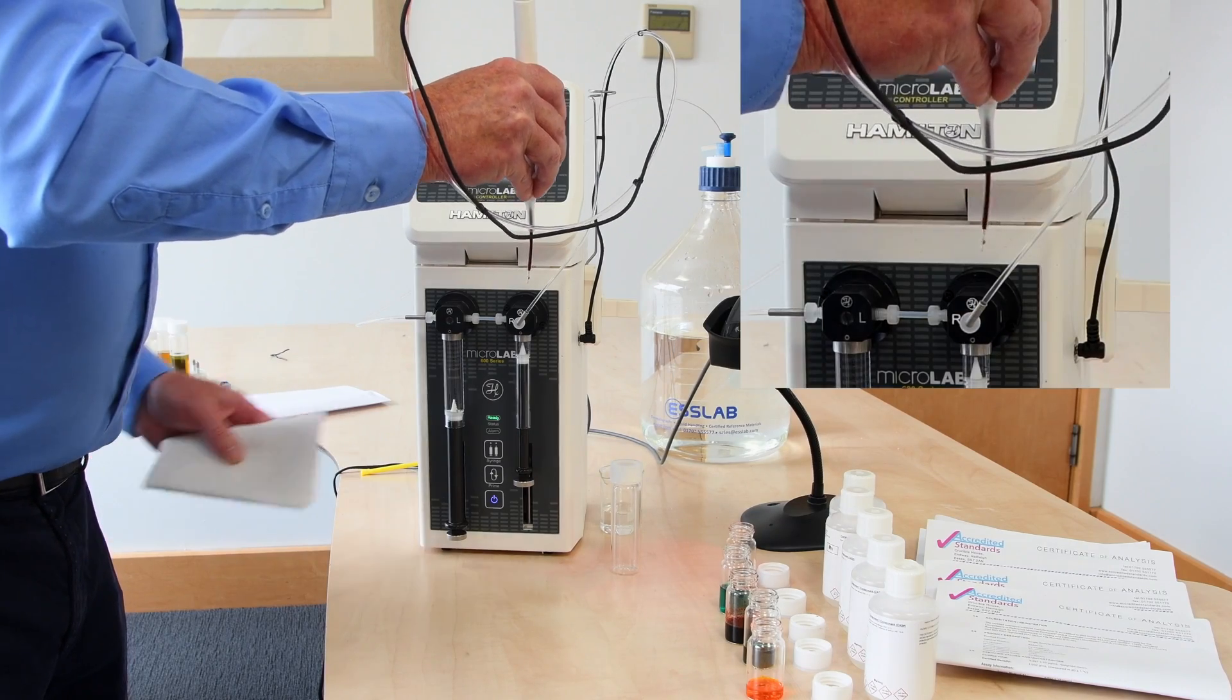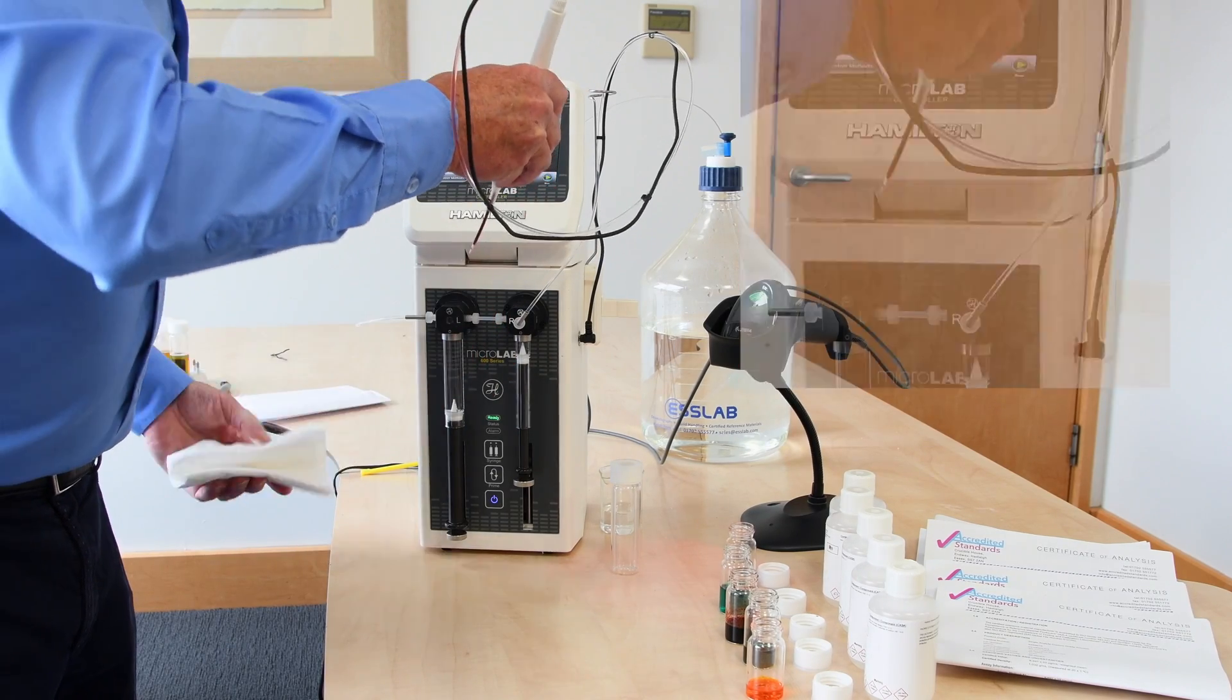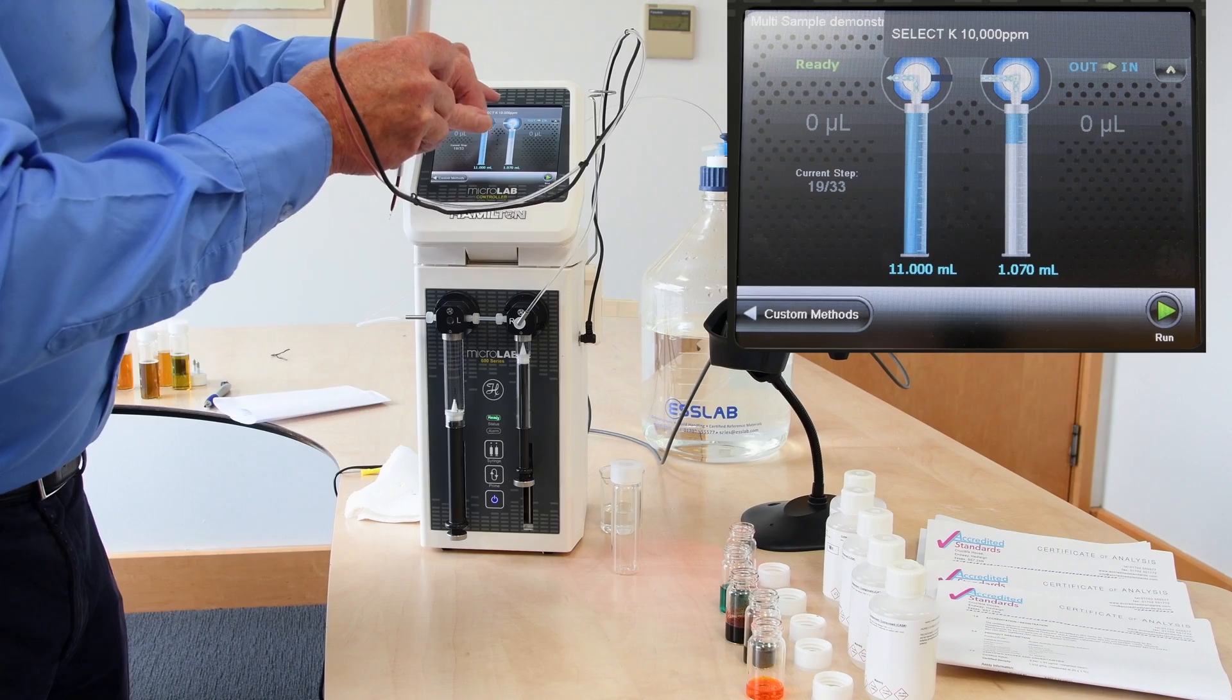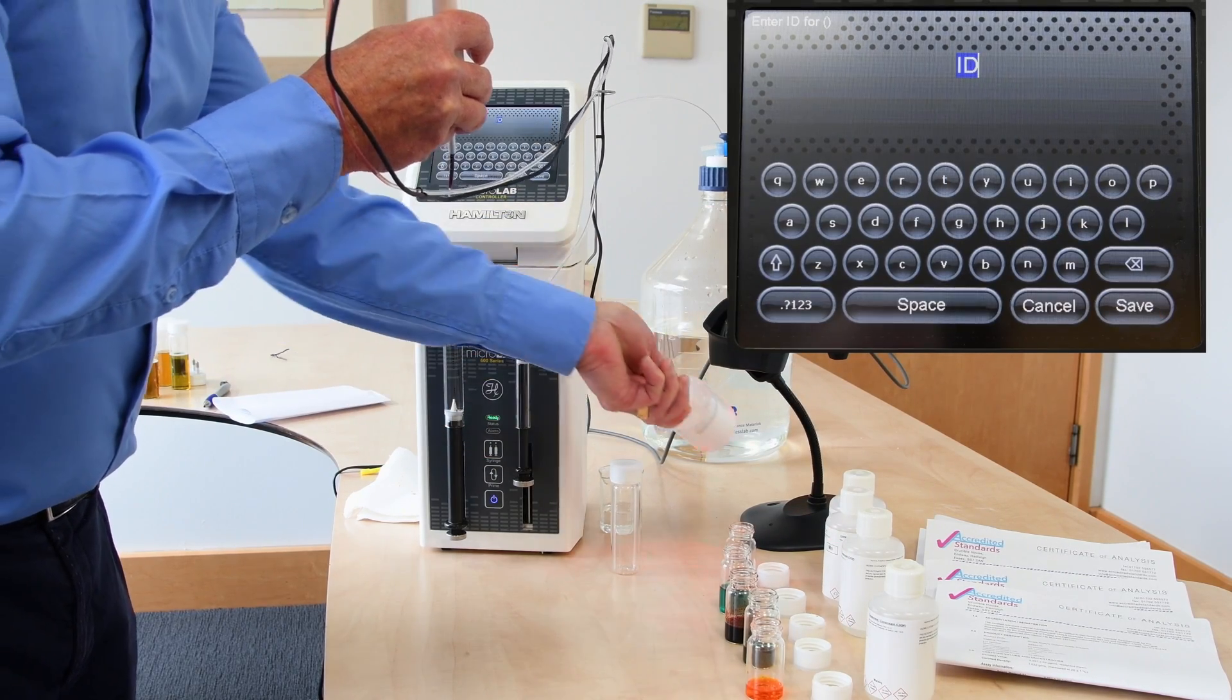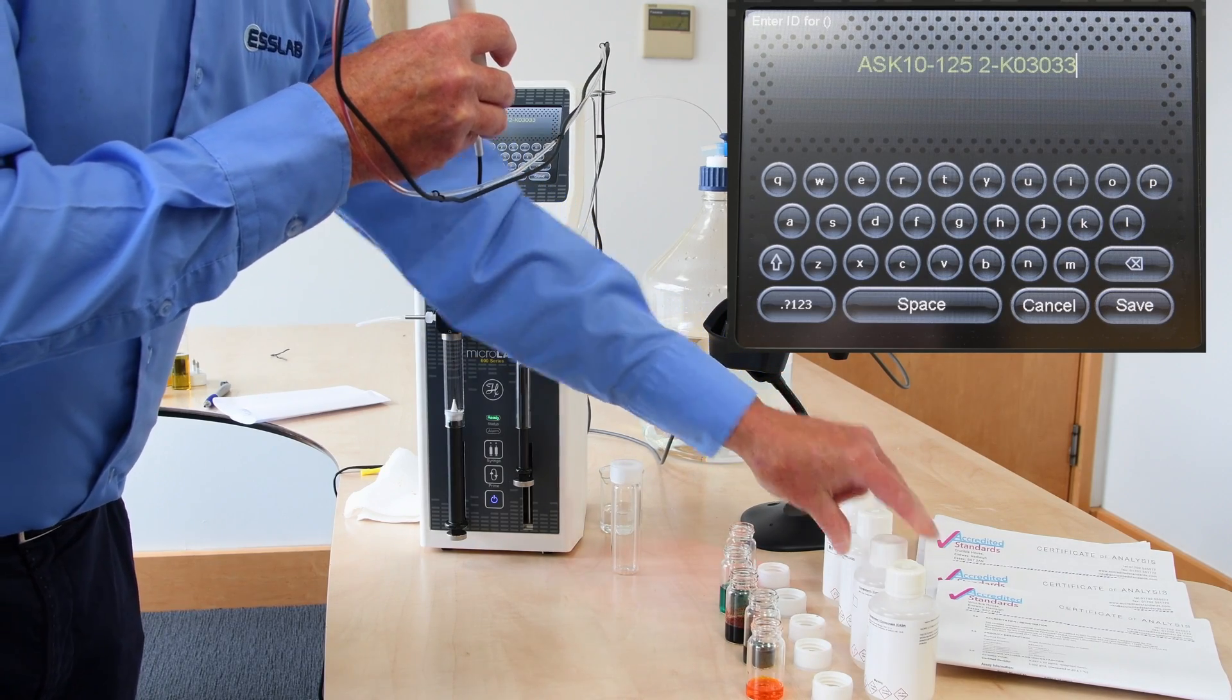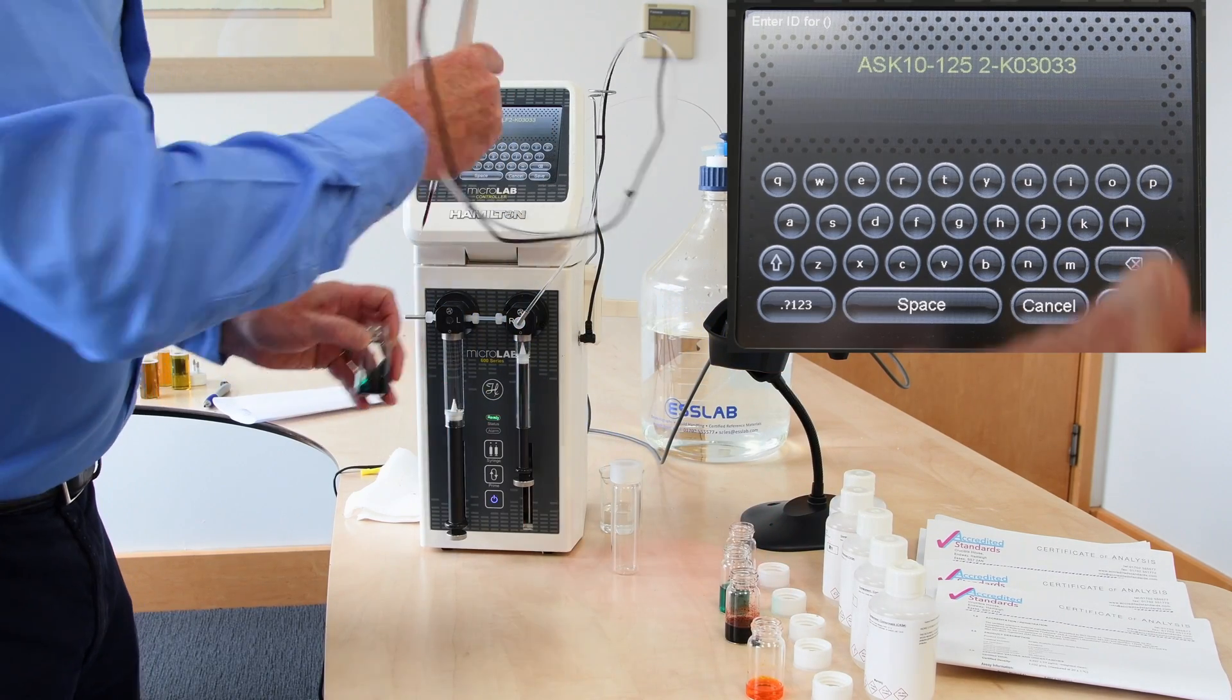Pick up air gap and wipe the tip. Now selecting potassium standard. I can enter the lot ID again. Save.